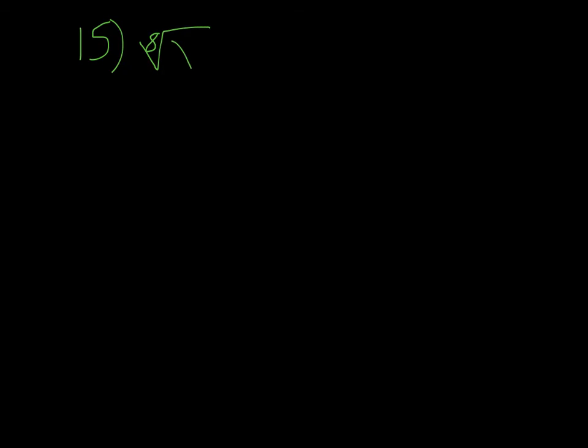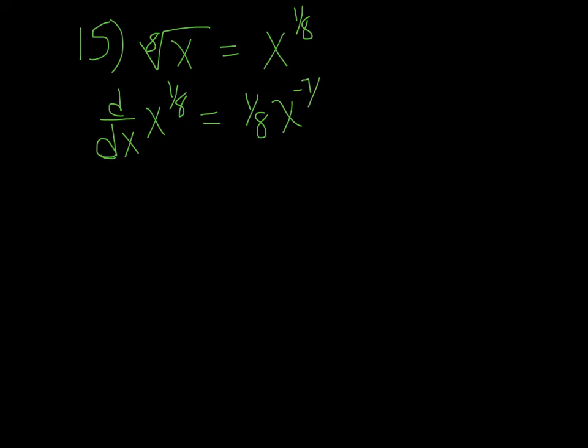Number 15: find the derivative of the 8th root of x. That's the same as x to the 1 eighth power. Its derivative is 1 eighth times x to the negative 7 eighths. If you're not good with fractions, just use your calculator: type 1 divided by 8 minus 1, enter, math, enter, enter.